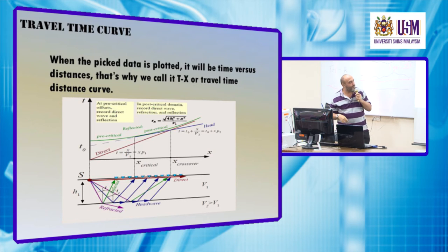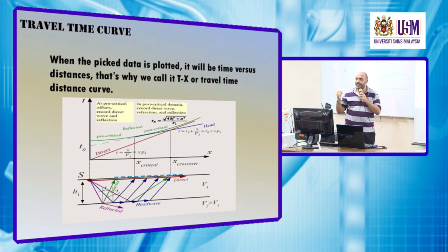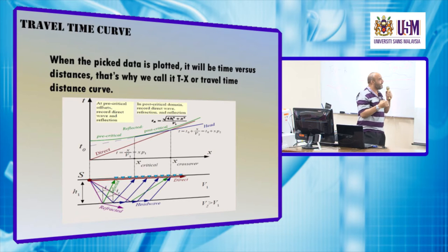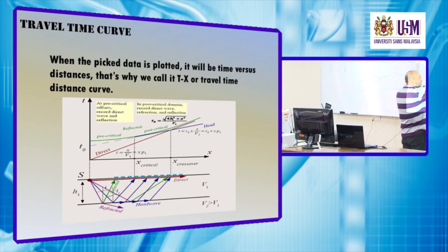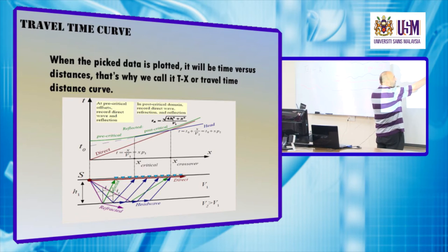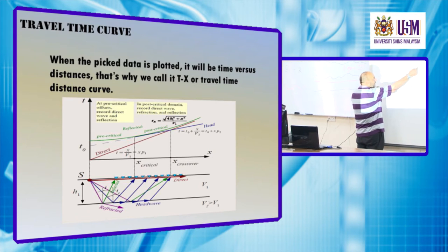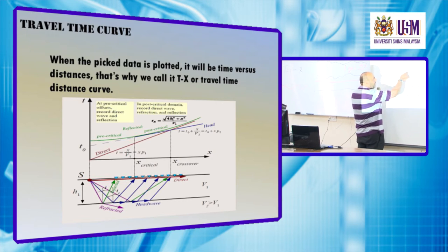The slope: we define any two points along the line, and then we determine the difference in T and divide by the difference in X.